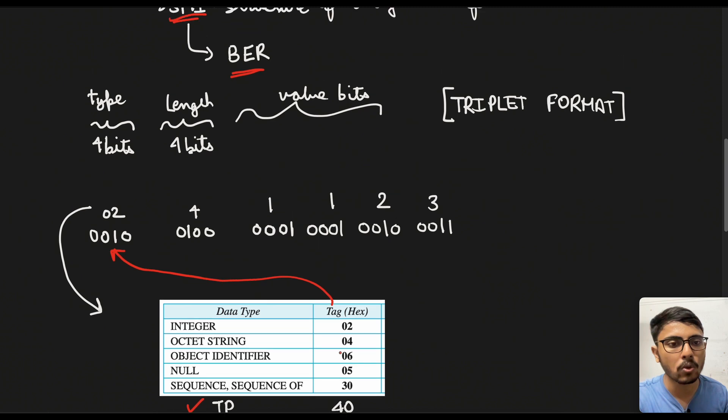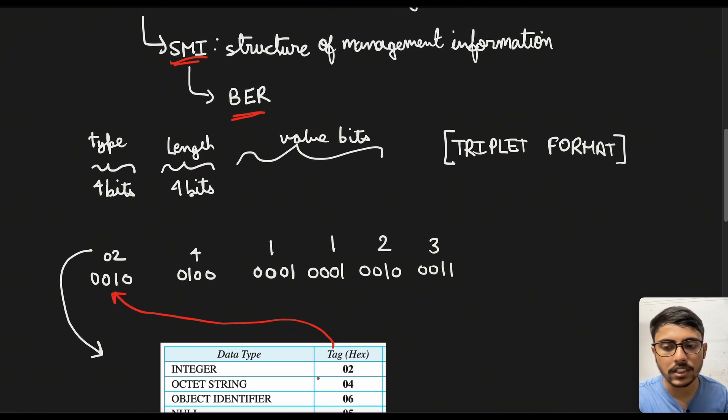So if we just go in that fashion, then first is 1123 and this is an integer. So consequently it will have 02. The top row is basically hex and the below row is basically the binary. So here I have just written this in binary format. So this is the actual BER encoded string. So first is 02.